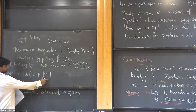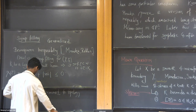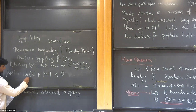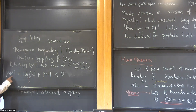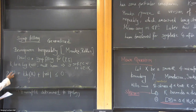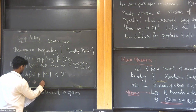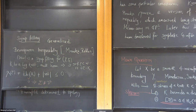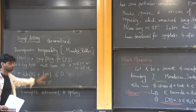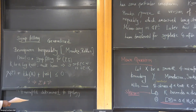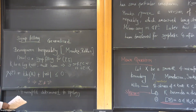The Bennequin inequality states: the Euler characteristic of Σ plus the Thurston-Bennequin number of K plus the absolute value of the rotation number is less than or equal to zero. So if a knot has Thurston-Bennequin number bigger than zero, that forces the Euler characteristic to be negative, which implies Σ cannot be a disk. This is a gauge-theory result that very nicely relates symplectic and contact geometry.